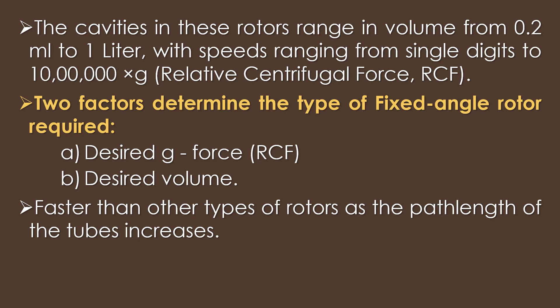Two factors determine the type of fifth set angle rotor required: the desired g-force and the desired volume. Fifth set angle rotors are faster than other types of rotors as the path length of the tube increases.